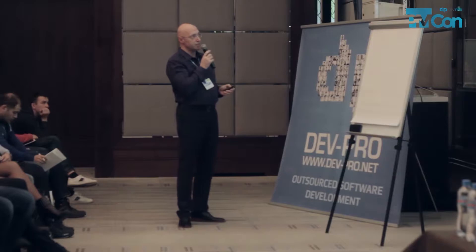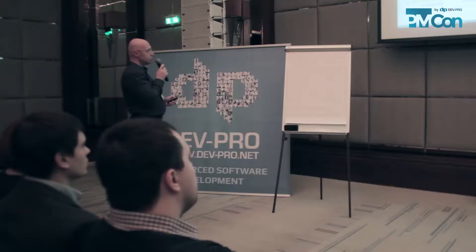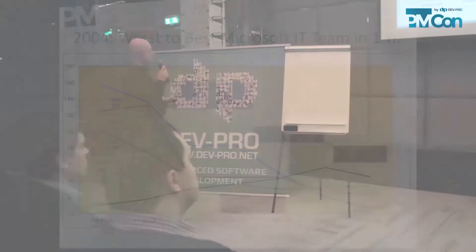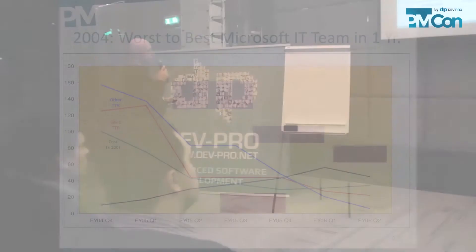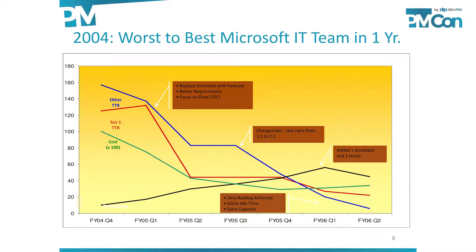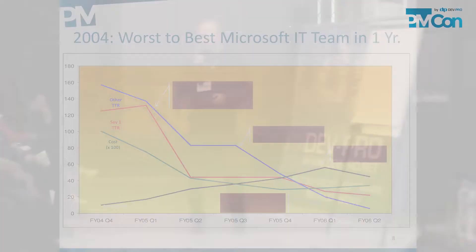Another line shows cost: on average it was a little over ten thousand dollars per request and went all the way down to about twenty-five hundred dollars — a four-times reduction in cost. Productivity went from about nine to ten things per quarter up to close to sixty — the same people doing the same type of work.